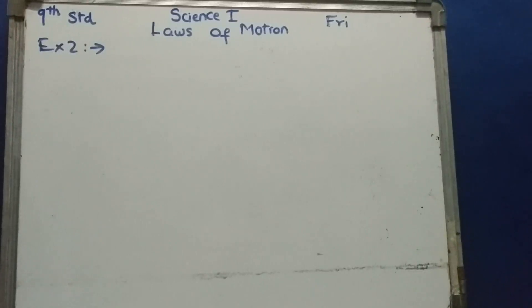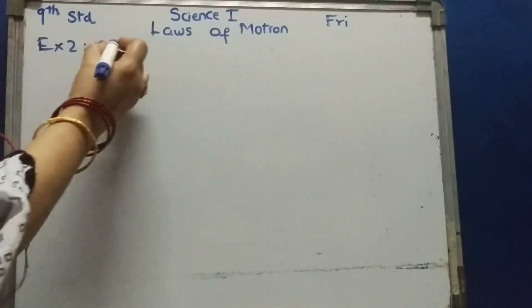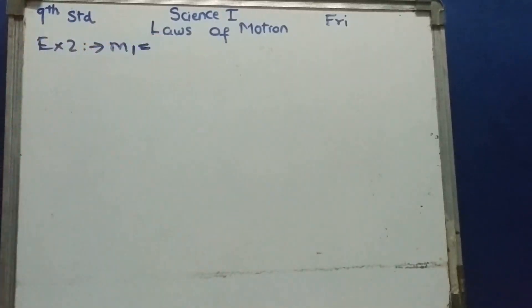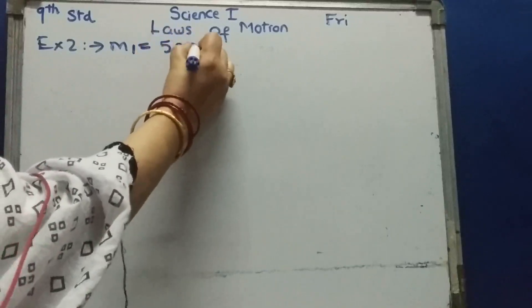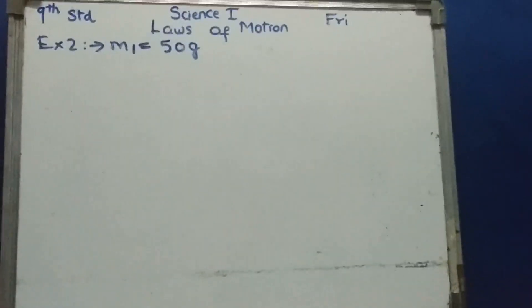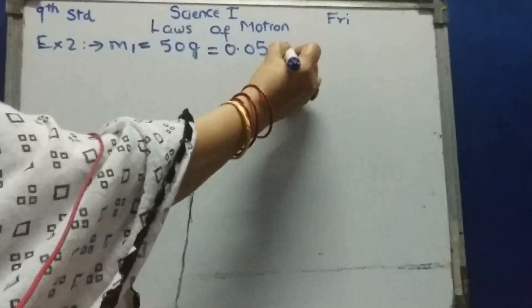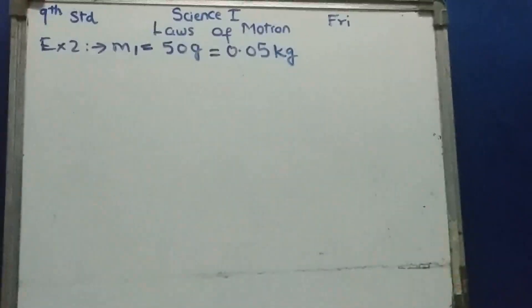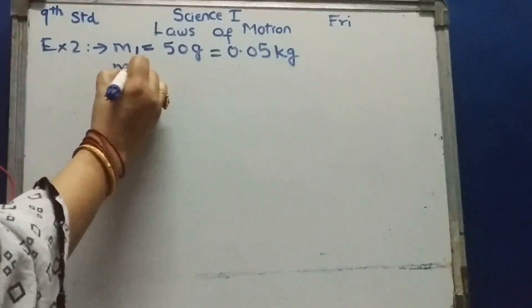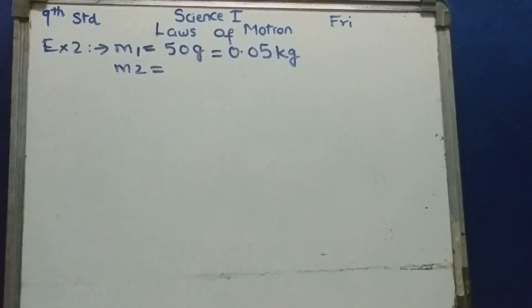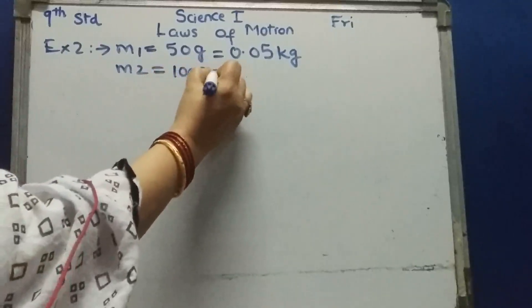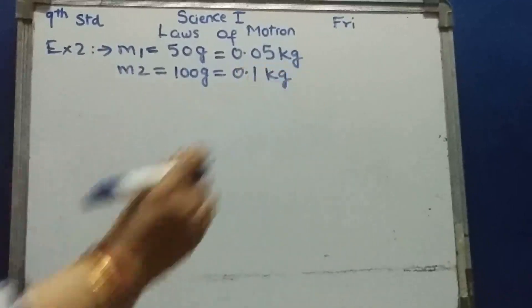Two balls have masses of 50 grams and 100 grams. Therefore, mass of the first object M1 is equal to 50 grams, which after converting into kg gives 0.05 kg. Mass of the second object M2 is equal to 100 grams, which means 0.1 kg.